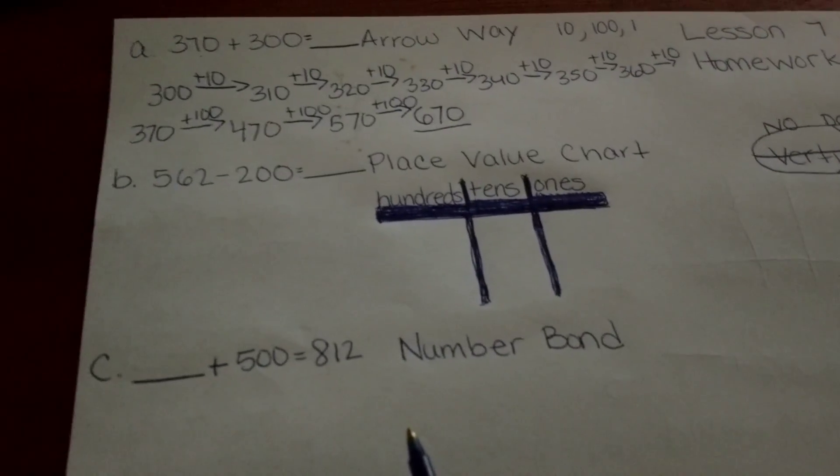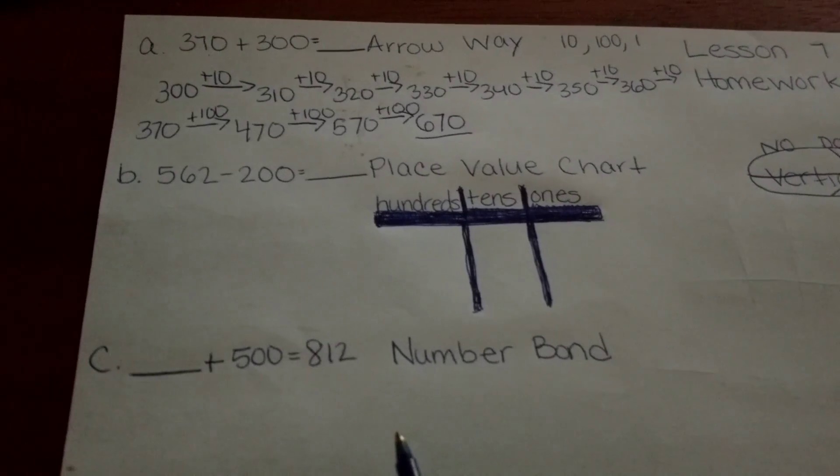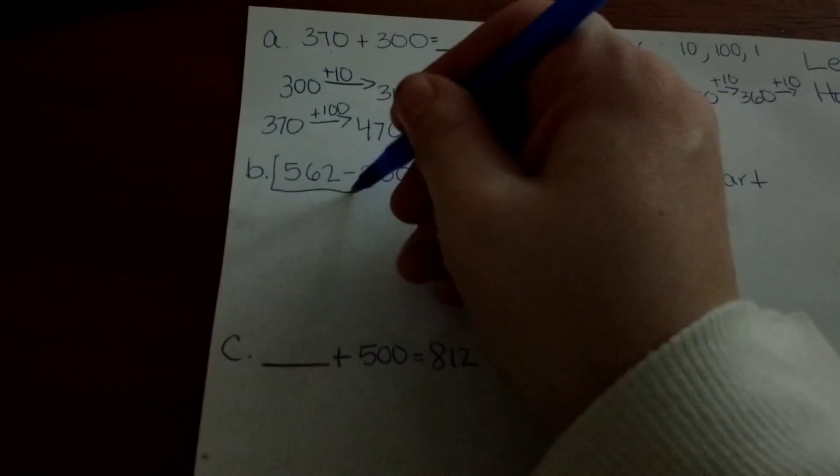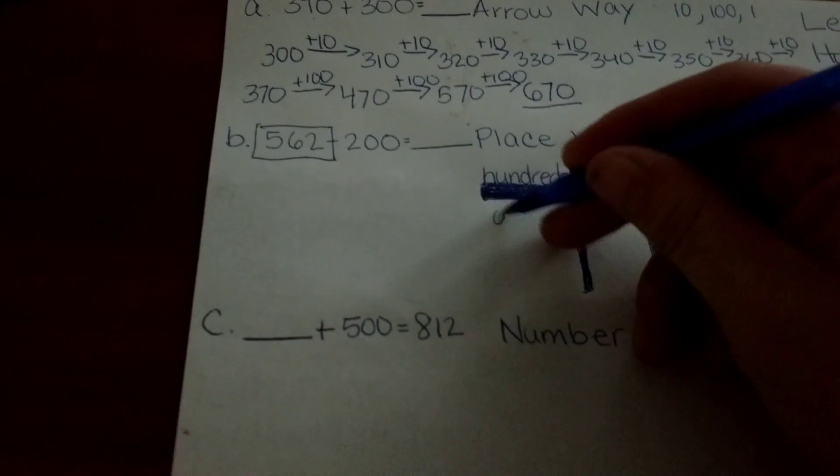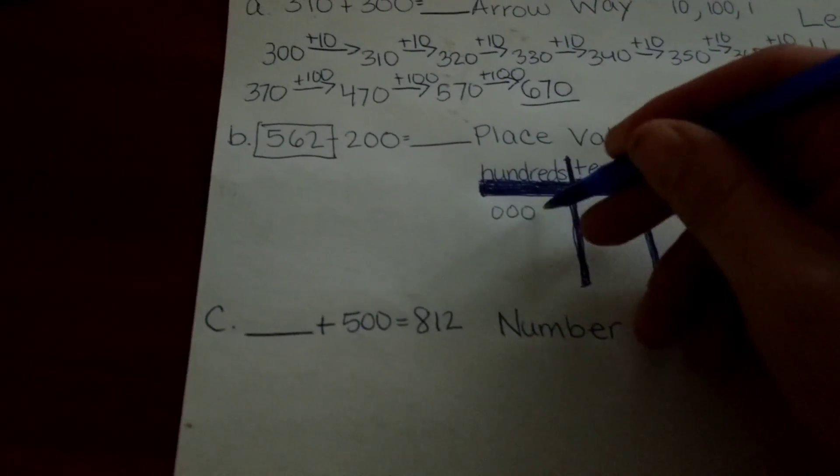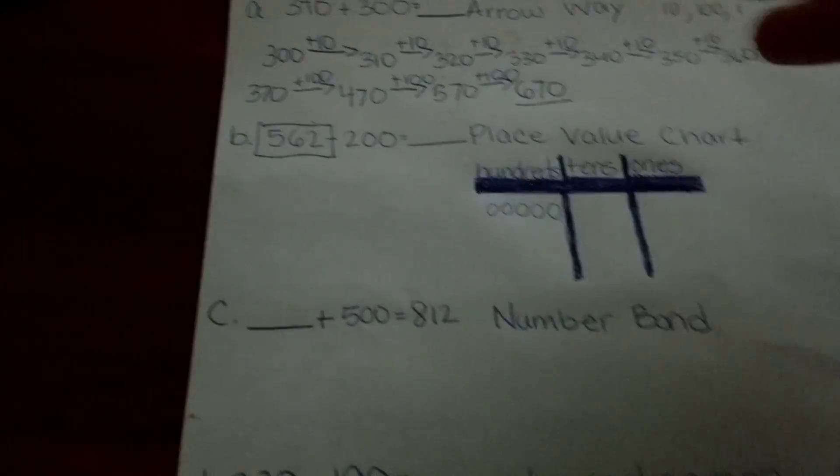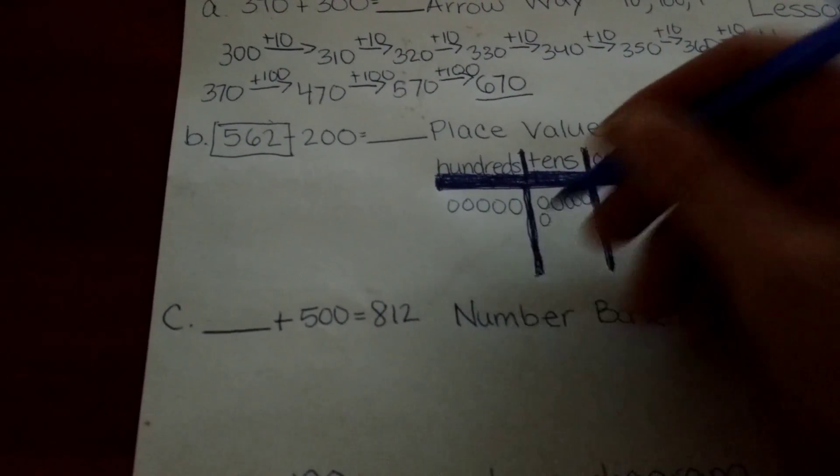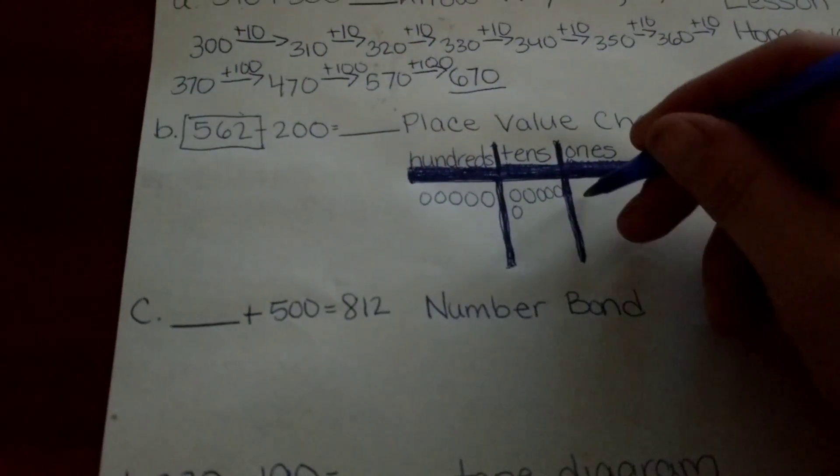Alright, so we're going to look at place value chart. 562 minus 200. We're going to put this number in our place value chart. 100, 200, 300, 400, 500. 6 tens: 1, 2, 3, 4, 5, 6 tens and 2 ones.